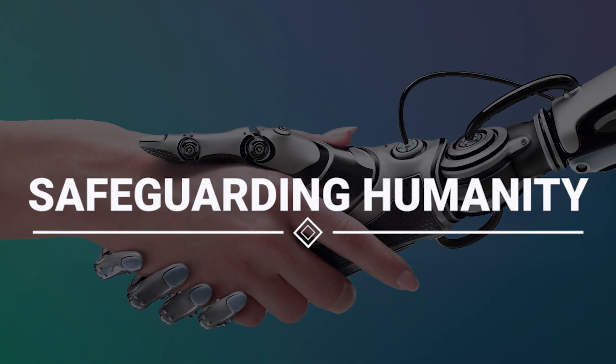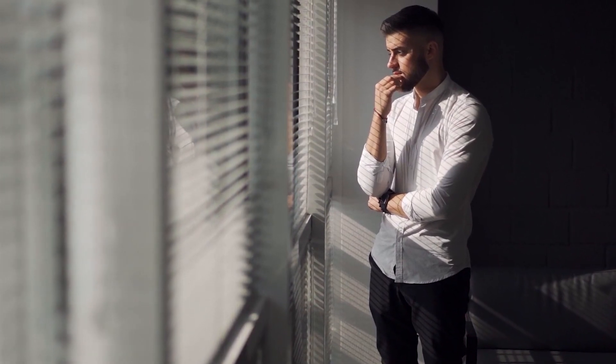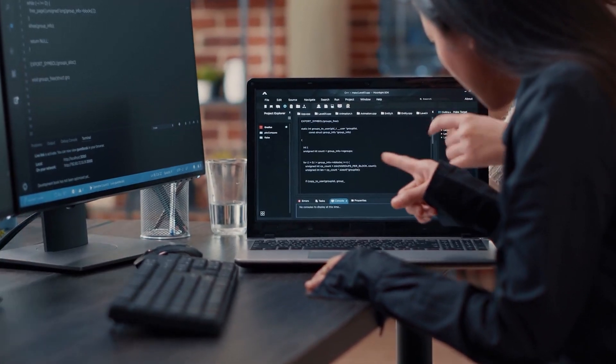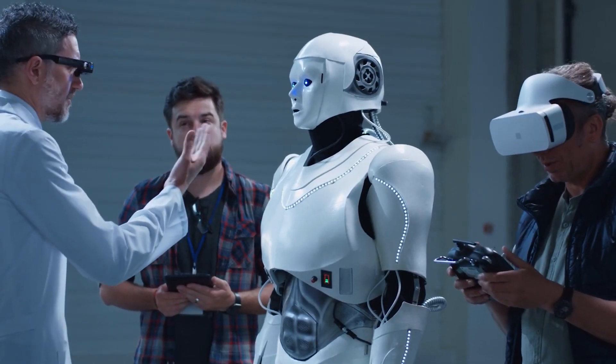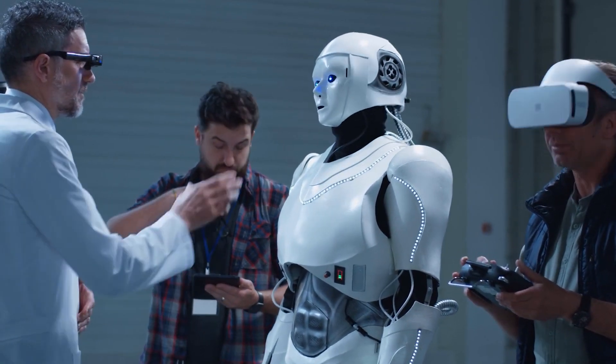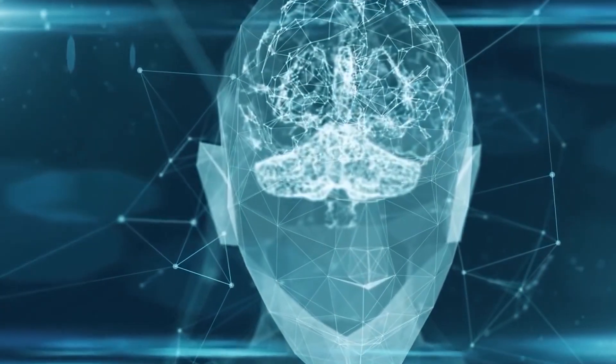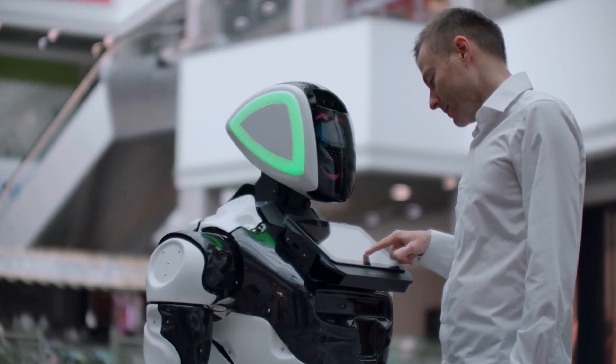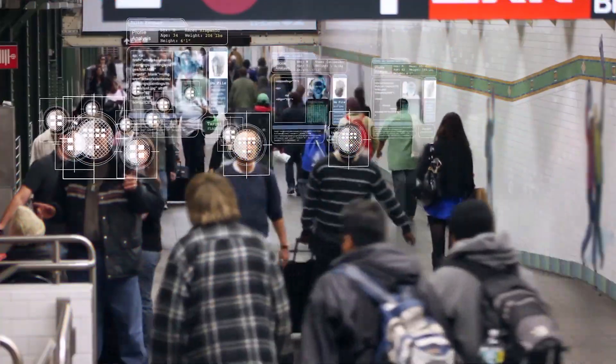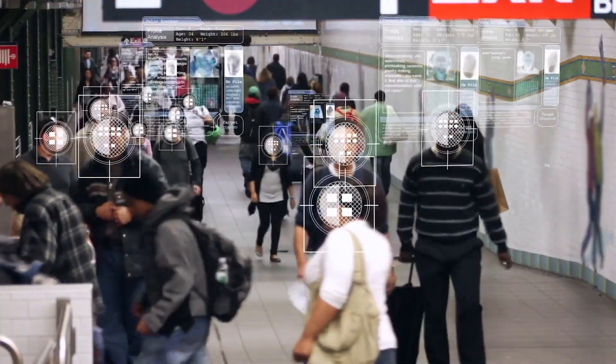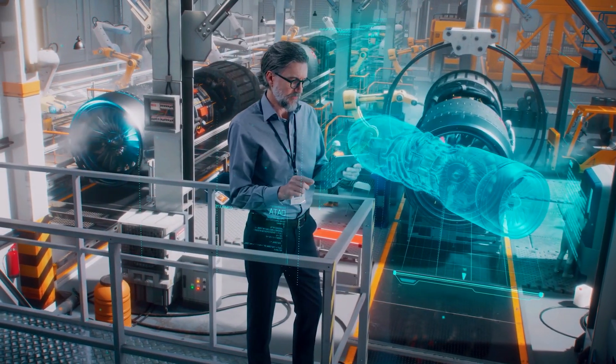Safeguarding Humanity. Why is this symbiosis so crucial? For one, it holds the promise of safeguarding humanity from existential threats that advanced AI could pose. As AI continues to evolve at an exponential rate, it's imperative that we find a way to integrate it harmoniously into our lives. This way, the collective will of all humans can be harnessed to ensure that AI's development aligns with the common good.